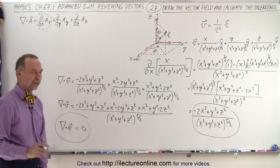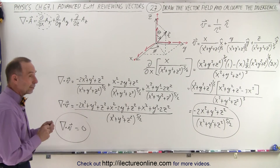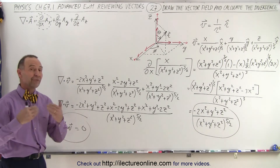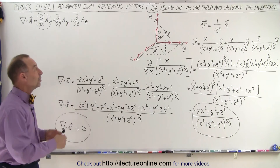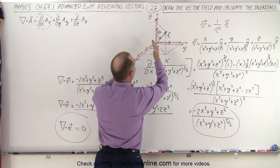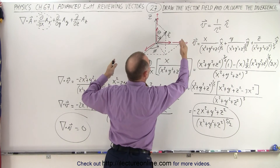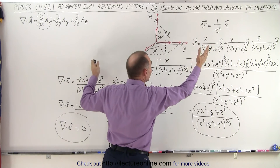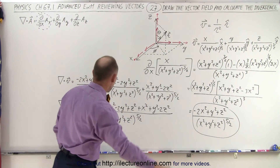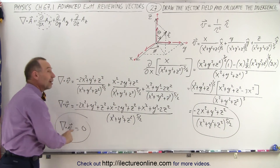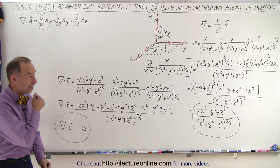All that work just to get that simple result. Does that make sense? Remember that the divergence is a measure of how the vector field spreads out. Notice that as you go further out, the vector field diminishes and eventually becomes equal to 0. So it doesn't really spread out — it diminishes over a distance out to infinity, and that gives us a divergence equal to 0. And that is how it's done.